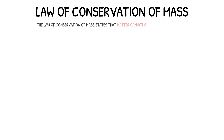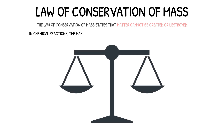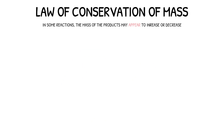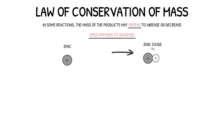The law of conservation of mass is used in science to explain the conservation of matter. This law states that matter cannot be created or destroyed, and can only be transferred from one place to the next. In chemistry, this means that the mass of the reactants in a chemical reaction must always equal the mass of the products. In some reactions the mass of the products may appear to increase or decrease — the keyword here is 'appear', as the matter that appears to have been lost or gained can always be accounted for.